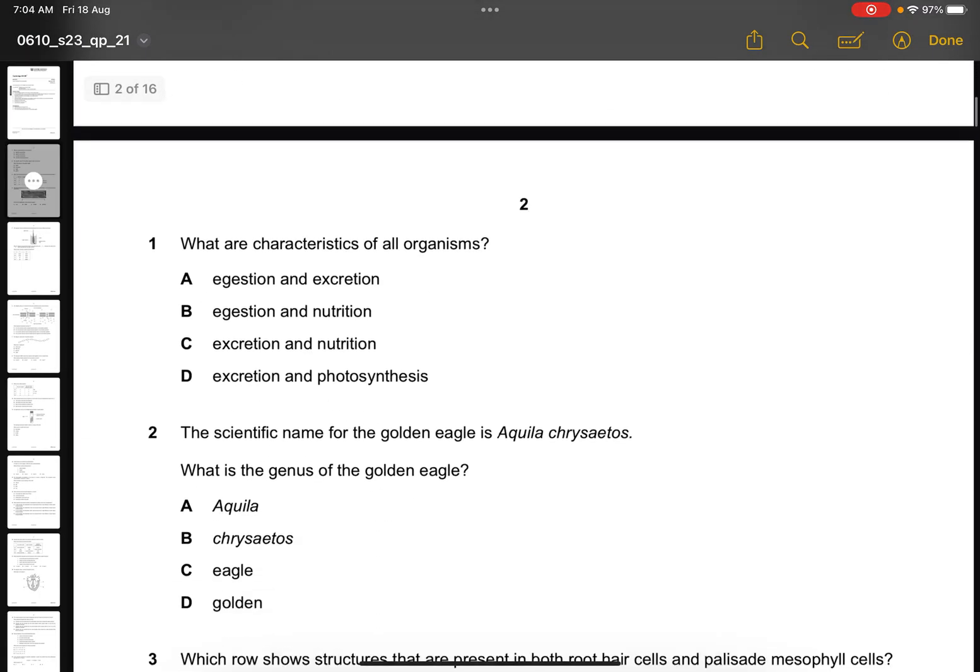Question 1. What are the characteristics of all organisms? The answer is C, excretion and nutrition, because it's the only two that are part of Mrs. Gren.